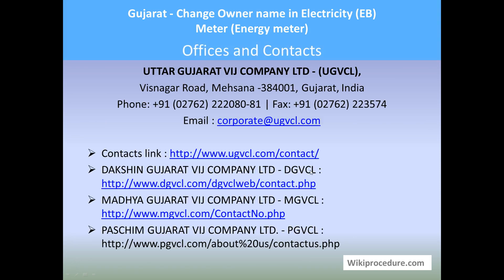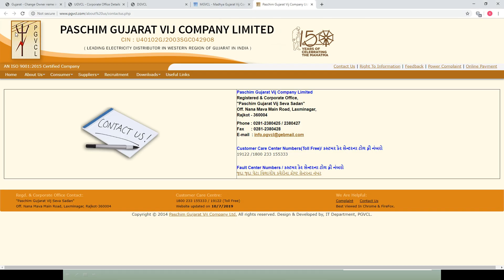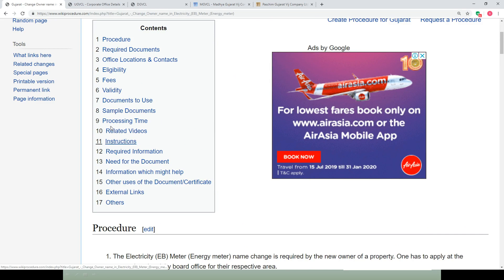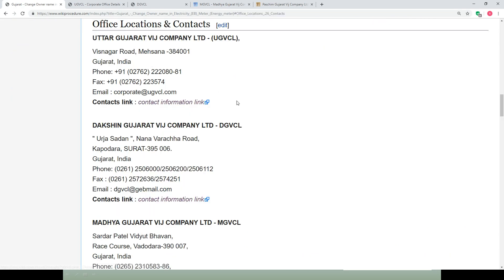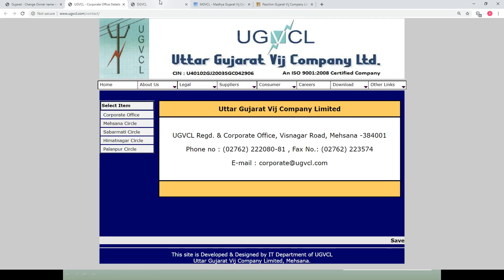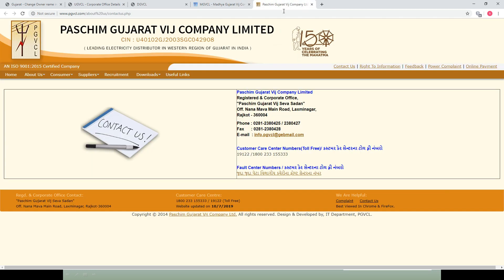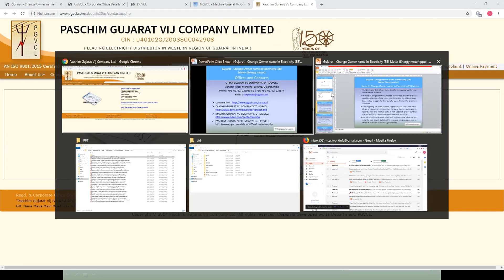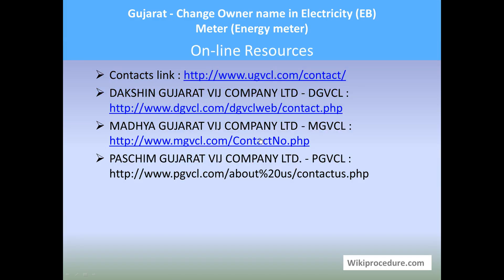Offices and contacts: Gujarat Urja Vikas Nigam Limited, Mezzanine, Gujarat, India — phone number, fax, and email are provided for personal interaction with the department. All these links are also available in our wikiprocedure page under the office location and contact section. You can use these links to reach the respective contact information pages of the service providers to get the information needed for your communication.